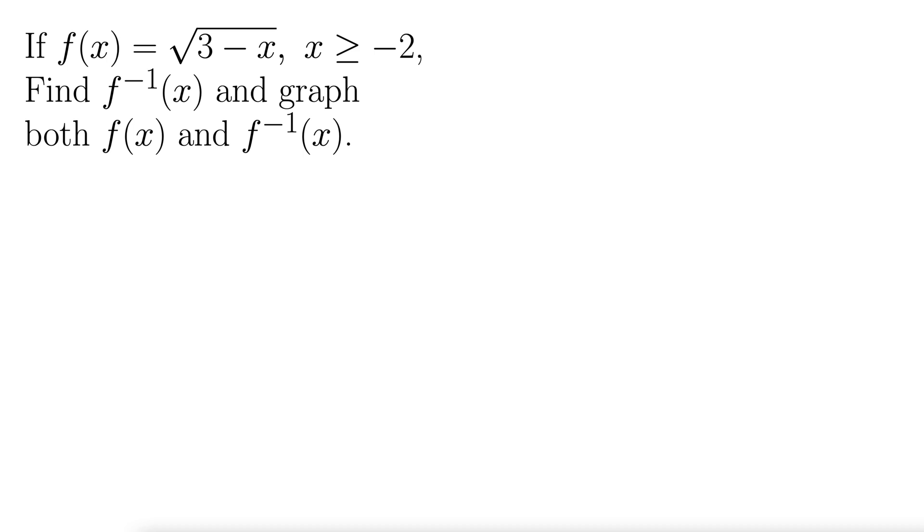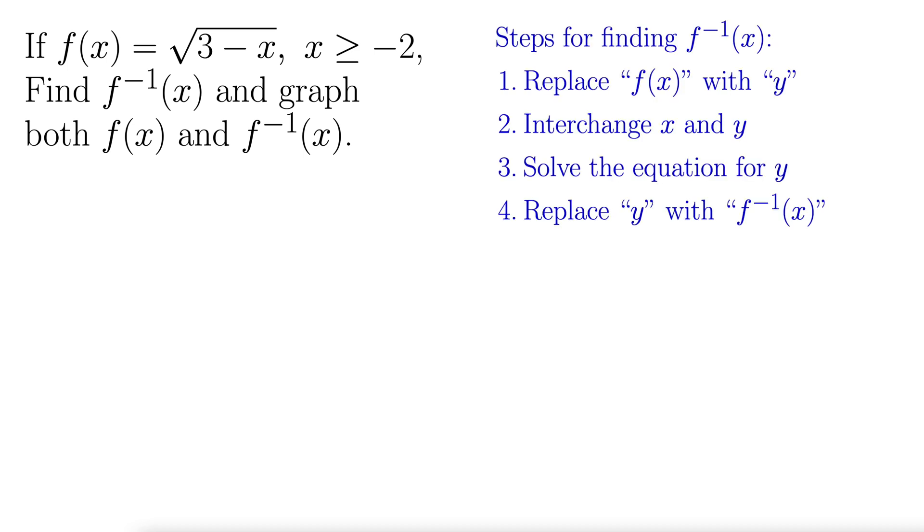Let's bring up the steps to find the inverse function. First, we want to take our function and replace f(x) with y. So, y equals the square root of 3 minus x. Now we swap x and y.